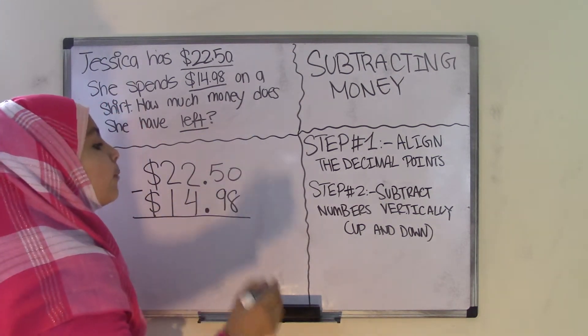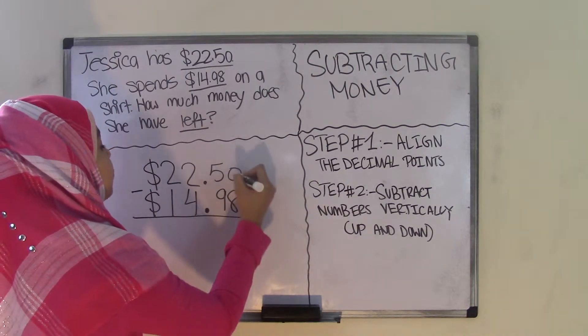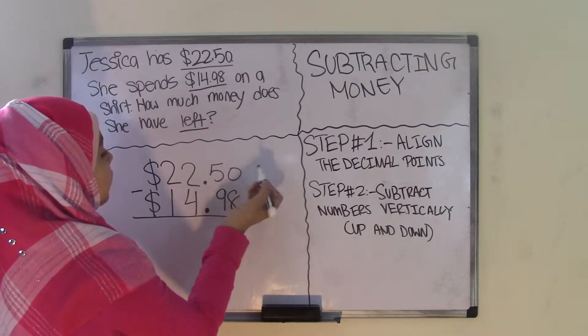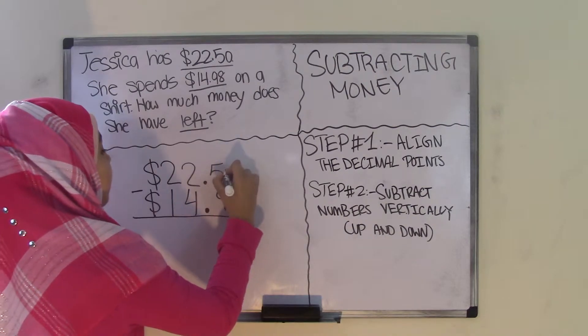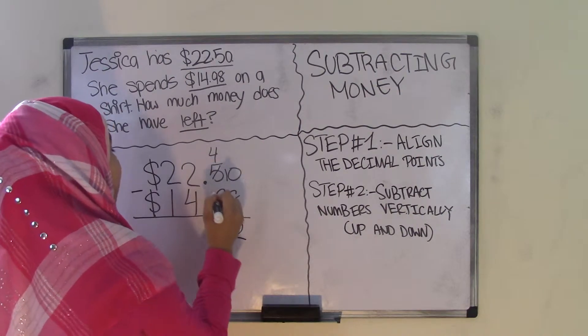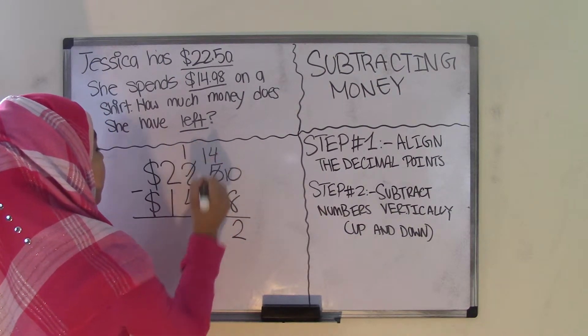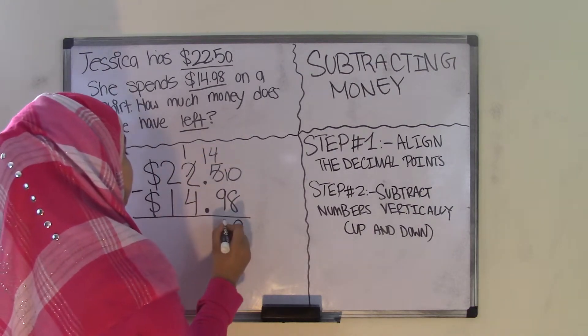The next step says subtract numbers vertically, which means up and down. First I have 8 subtracted from 0. We cannot take away 8 from 0, so we're going to have to borrow 1 from the 5 and make that a 10. And the 5 now becomes a 4. 10 minus 8 is 2. We can't subtract 9 from 4, so we're going to have to borrow 1 from the 2. The 2 becomes a 1 and the 4 becomes a 14. 14 minus 9 is 5.